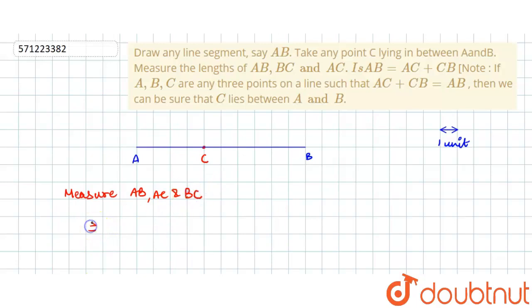So here you can see that AB has 10 boxes: one, two, three, four, five, six, seven, eight, nine, ten. So the length of AB will be equal to nine units.